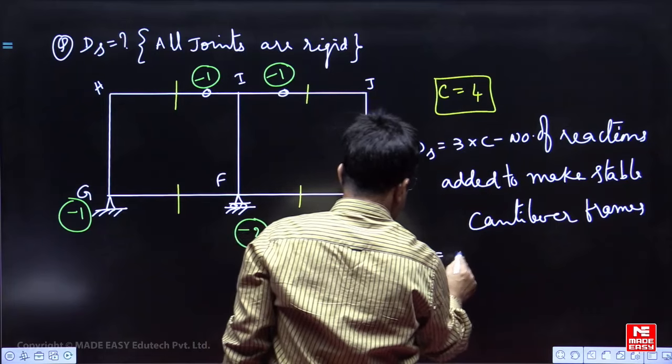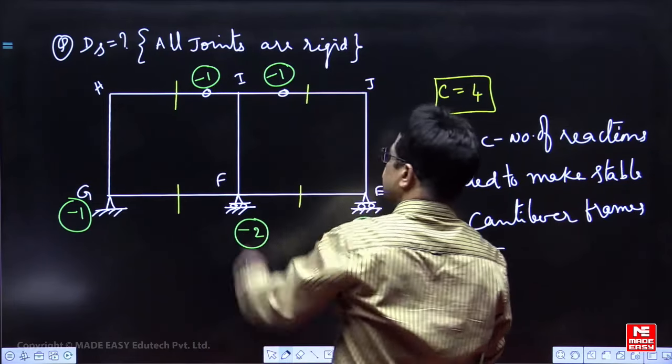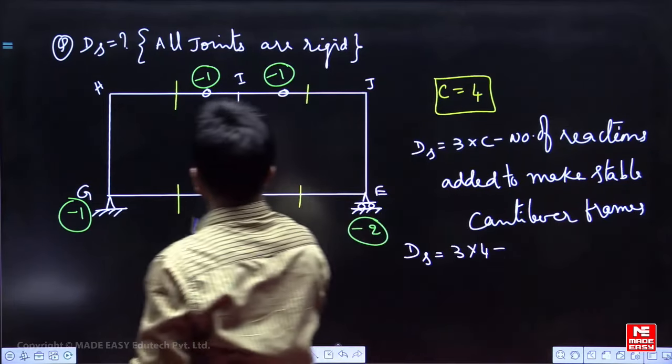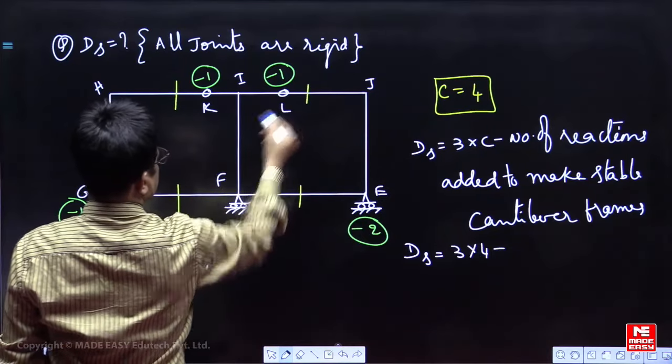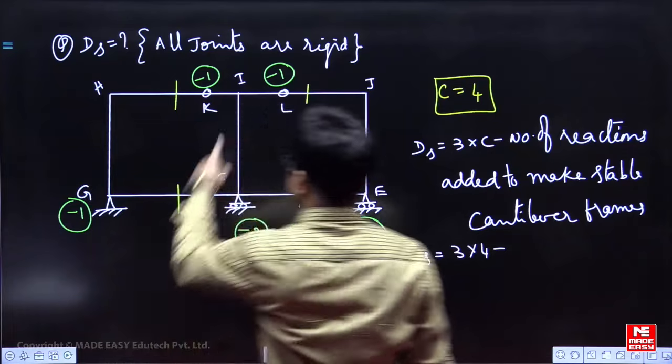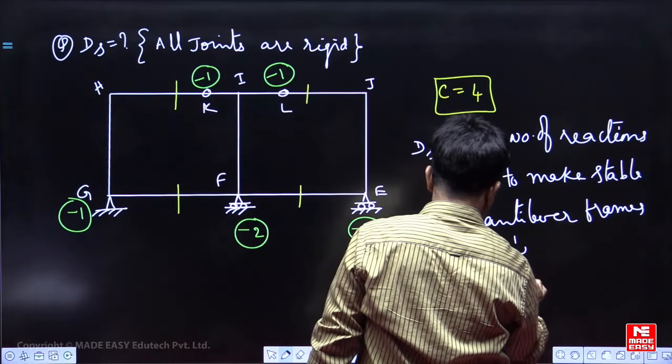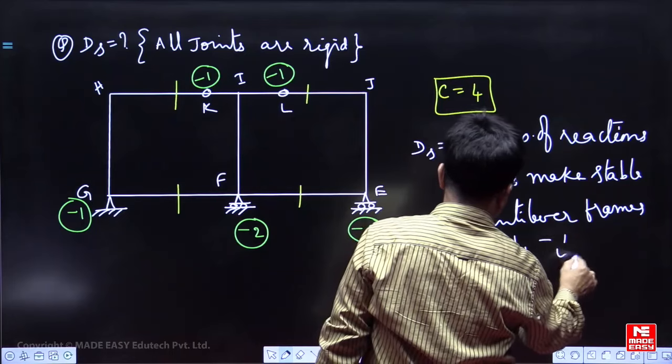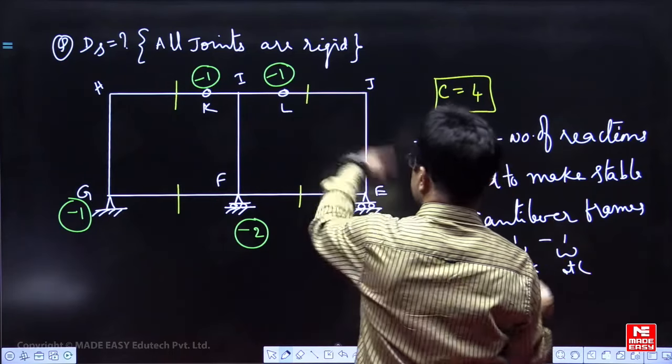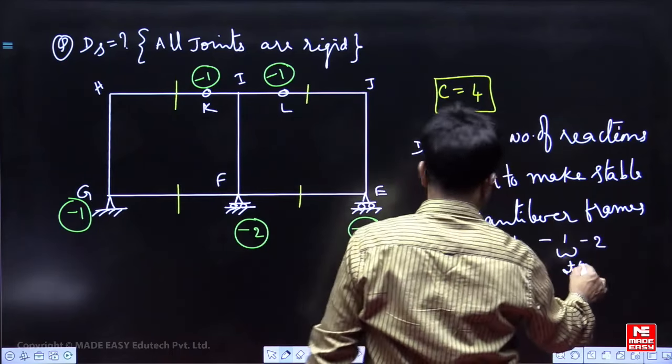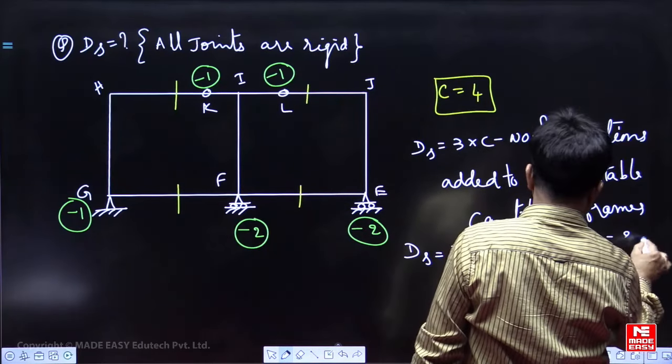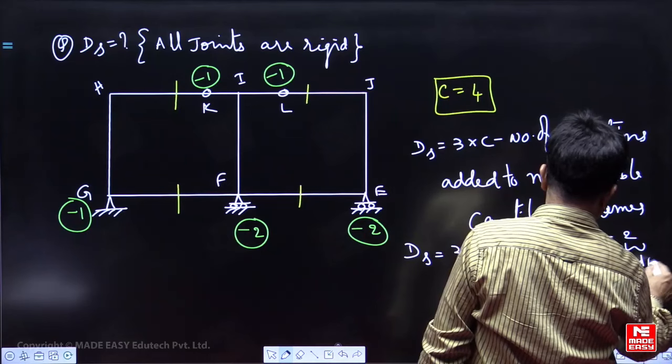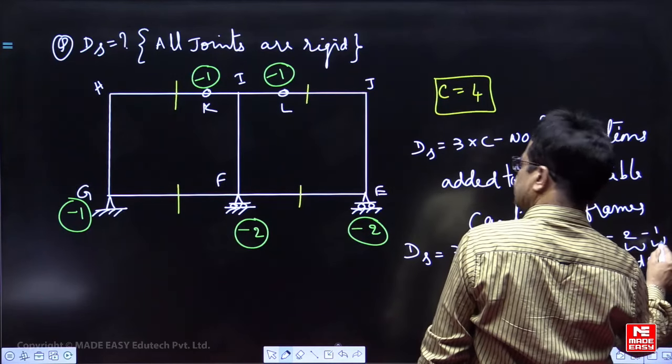Now DS becomes 3 times number of cuts are 4, minus this point let us say KL, minus 1 at K, minus 1 at L, minus 2 at E, minus 2 at F, minus 1 at D.